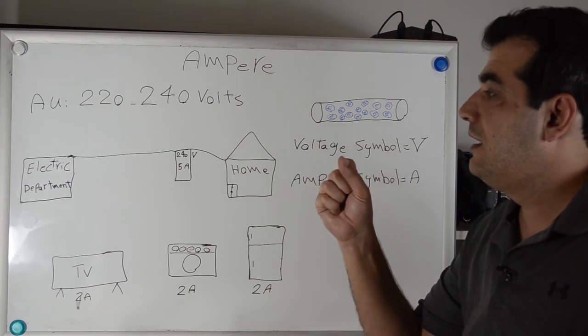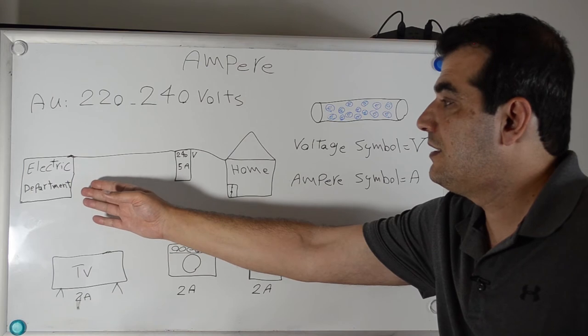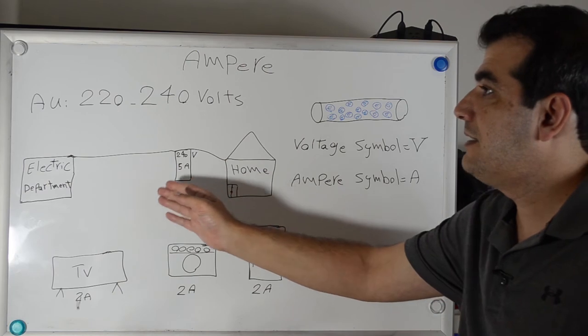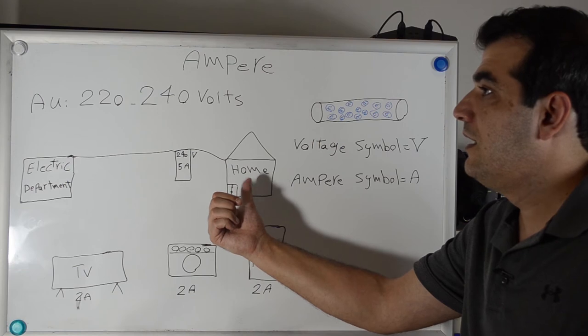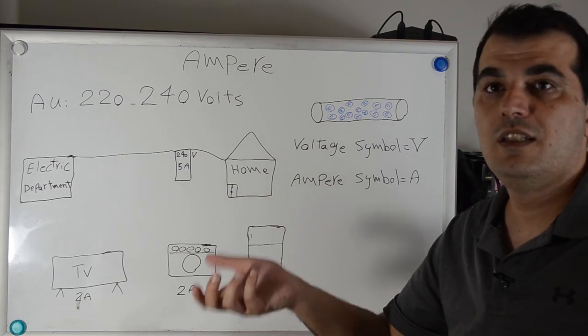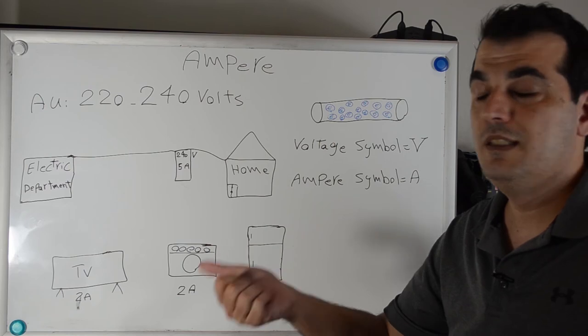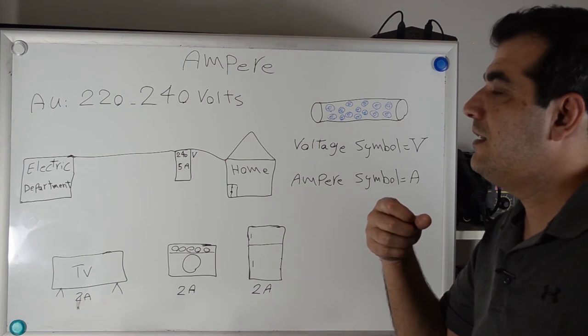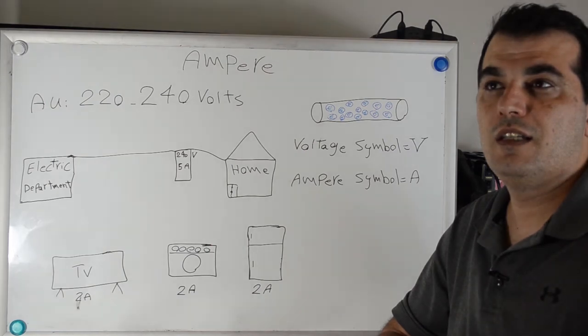Electricity comes to your home from the electricity department, but before it reaches your home, it passes through your home electricity meter, then enters your home. The ampere calculates the amount of electrical current passing through. After two months, you receive the electricity bill and need to pay.